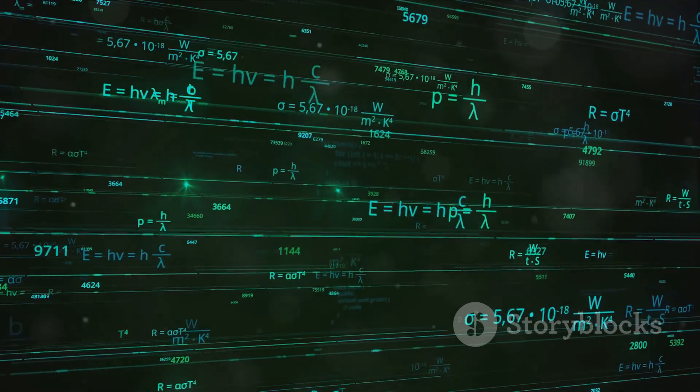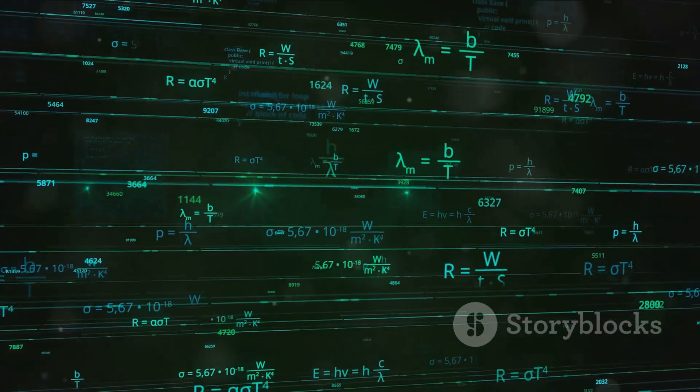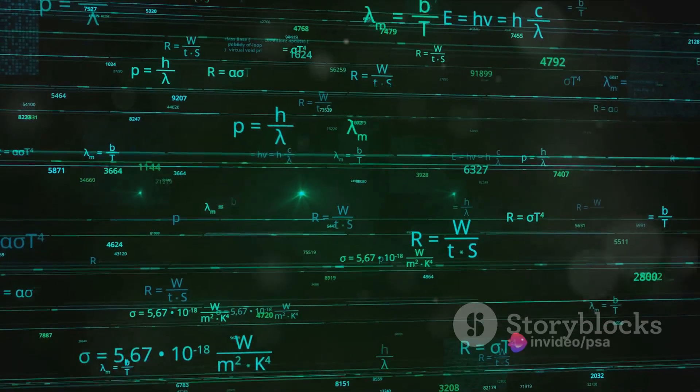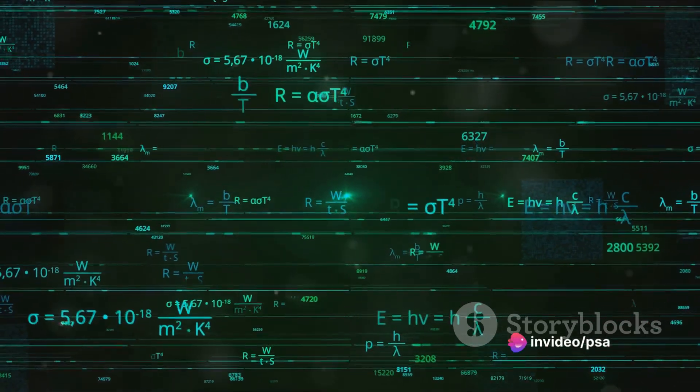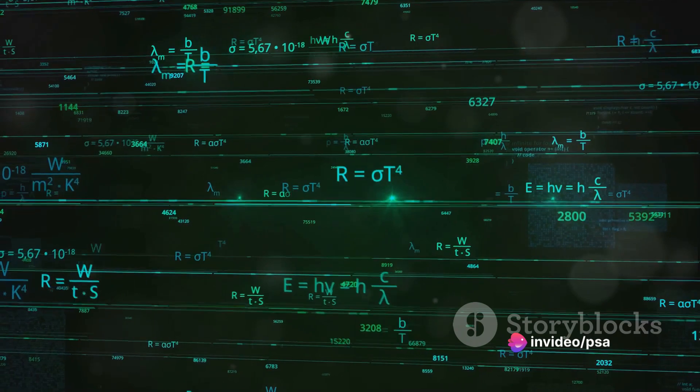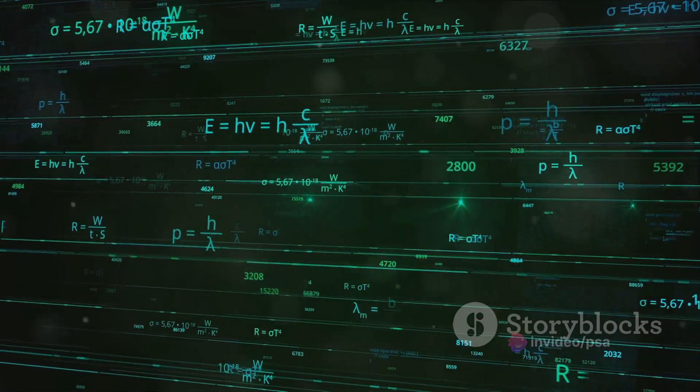The tangent function is a bit of a wild card. It's the ratio of the sine to the cosine, and its values can swing wildly from positive to negative infinity. But despite its seemingly chaotic nature, it too follows a predictable cycle.